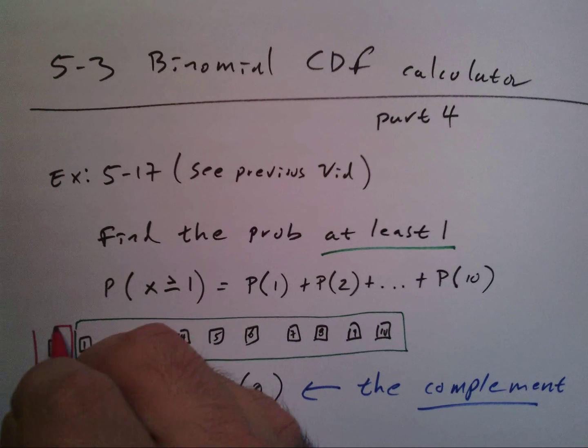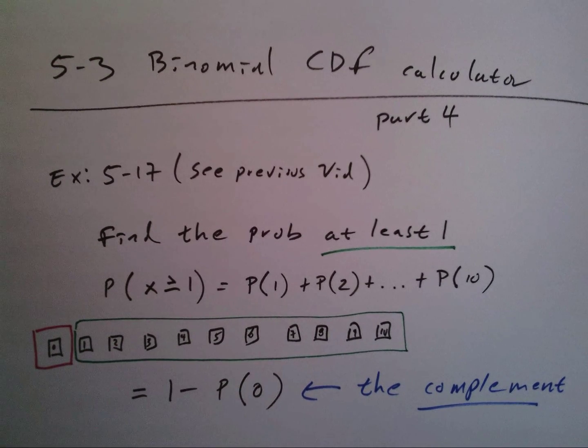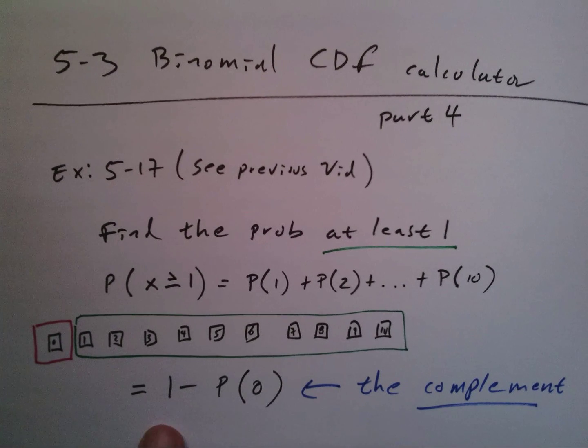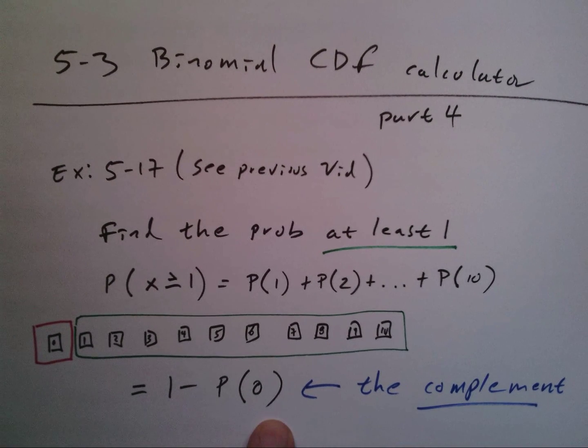I want, so I'm going to use green, everything from one up to ten. And what I don't want, and I will box that in red, is the probability of zero. So if I do one minus the complement...